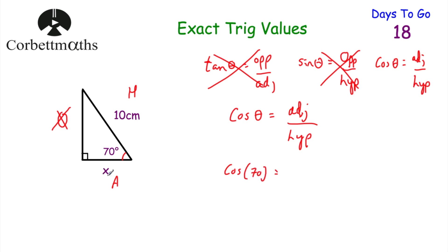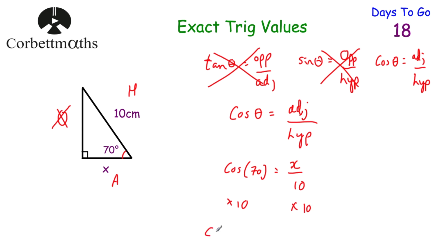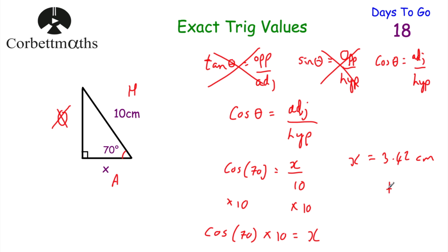We've been given 10 centimetres for the hypotenuse. We're trying to find the adjacent, so we can cross off the opposite and any trig ratio that uses it — so no tan, no sine. We're going to use cos. The cos of the angle equals the adjacent divided by the hypotenuse, so cos of 70° = x divided by 10. Multiplying both sides by 10 gives x = cos(70°) × 10, which equals 3.42 centimetres to two decimal places. Well done if you got that.